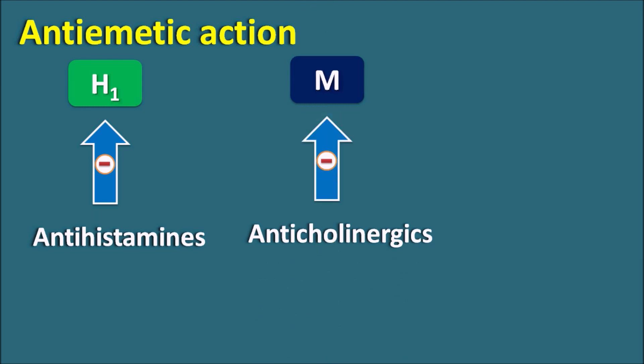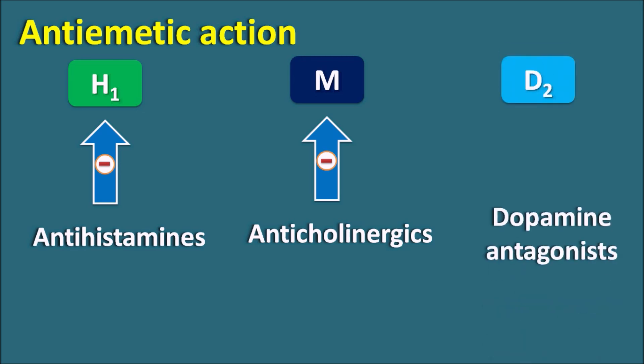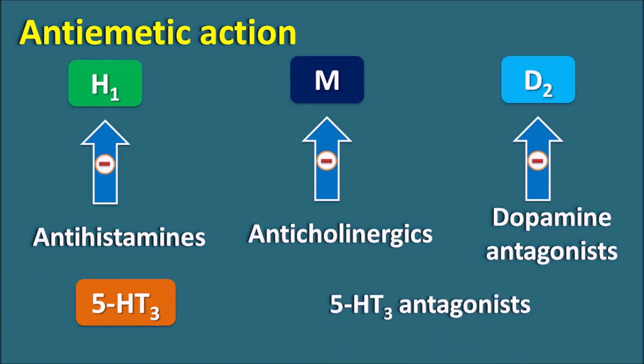Anti-cholinergics block muscarinic receptors, thereby preventing emesis. D2 receptors can be blocked by dopamine antagonists. And 5HT3 receptors can be blocked by 5HT3 antagonists. In this way, we have four types of antagonists: H1 antagonists, muscarinic antagonists, D2 antagonists, and 5HT3 antagonists. Now let us go through each one and see which drugs are useful and how they are used.